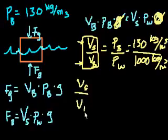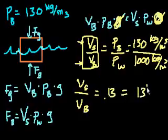So VS over VB is equal to 0.13, which is the same thing as 13%. So exactly 13% of this object will be, of this balsa wood block, will be submerged into the water. That's pretty neat to me. And it actually didn't have to be a block. It could have been shaped like a horse. I'll see you in the next video.